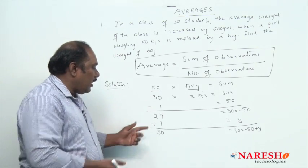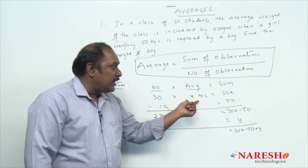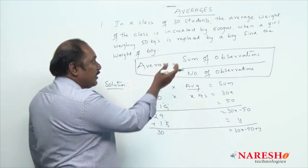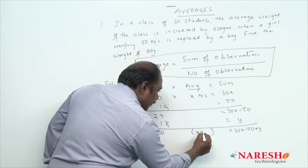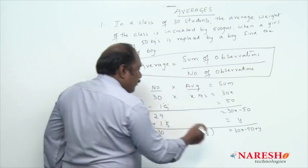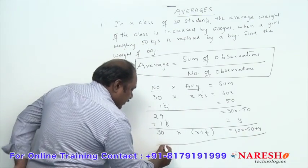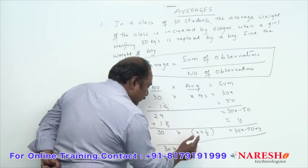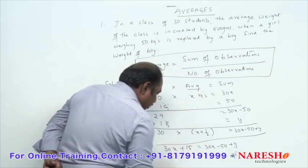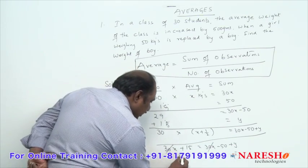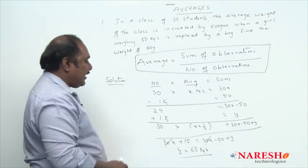When the girl quit and the boy entered, the average weight increased by 500 grams — half kg. So the new average should be x plus half. Based on the formula, number of students multiplied by average gives total weight: 30(x + 1/2) = 30x minus 50 plus y. Solving this, 30x plus 15 = 30x minus 50 plus y. Cancelling 30x, y equals 15 plus 50, which is 65 kg. So the weight of the boy who joined is 65 kg.